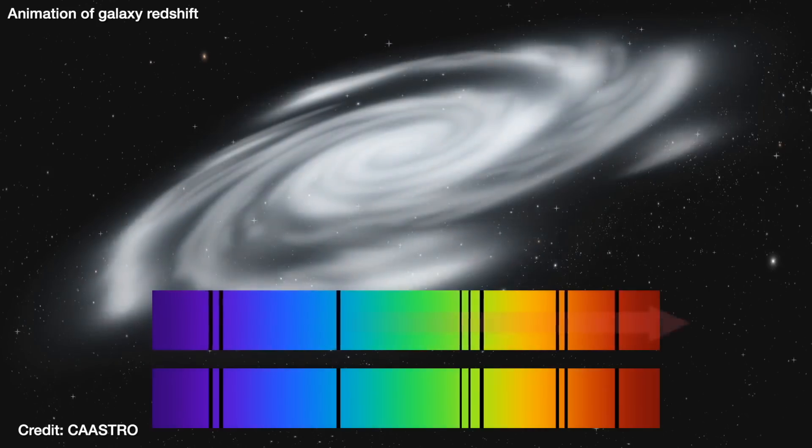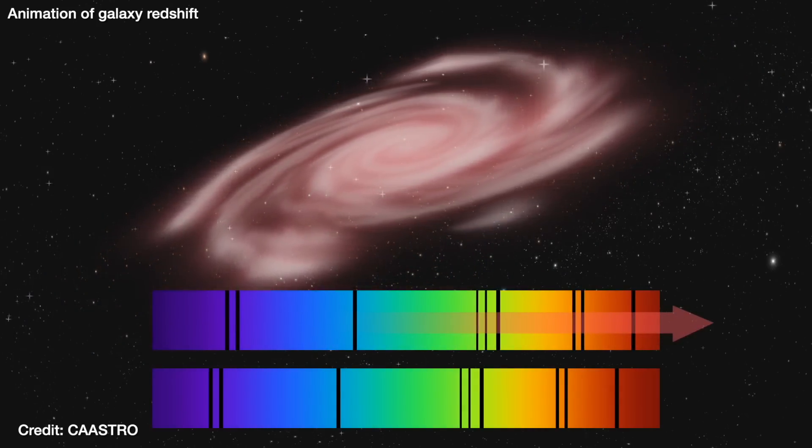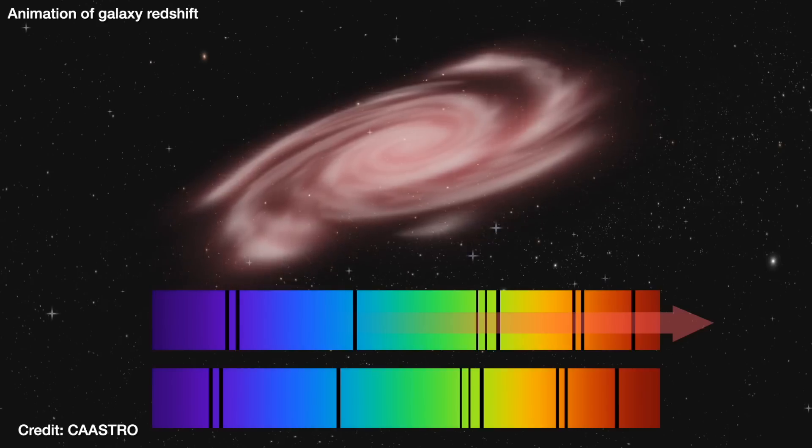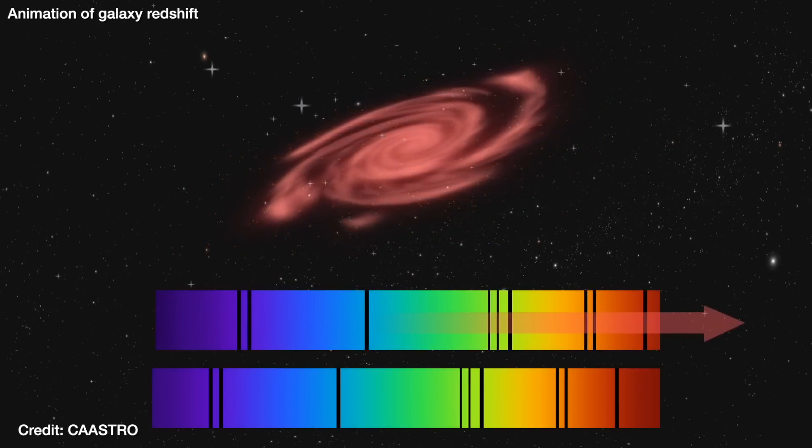This was first spotted in the 1920s by Edwin Hubble when he noticed that the light from all the galaxies has a Doppler shift. The light has been redshifted, stretched out on its way to us. That has been interpreted for a long time as the universe, space itself, expanding.